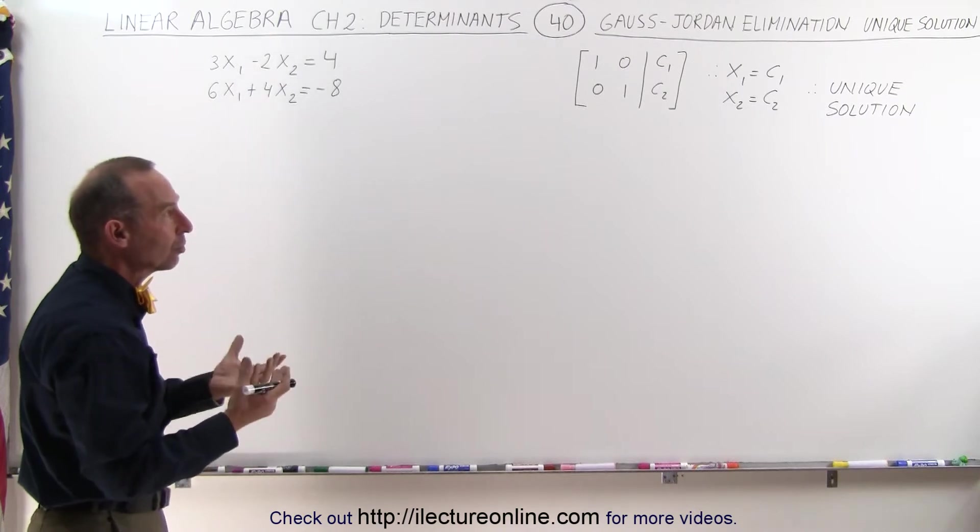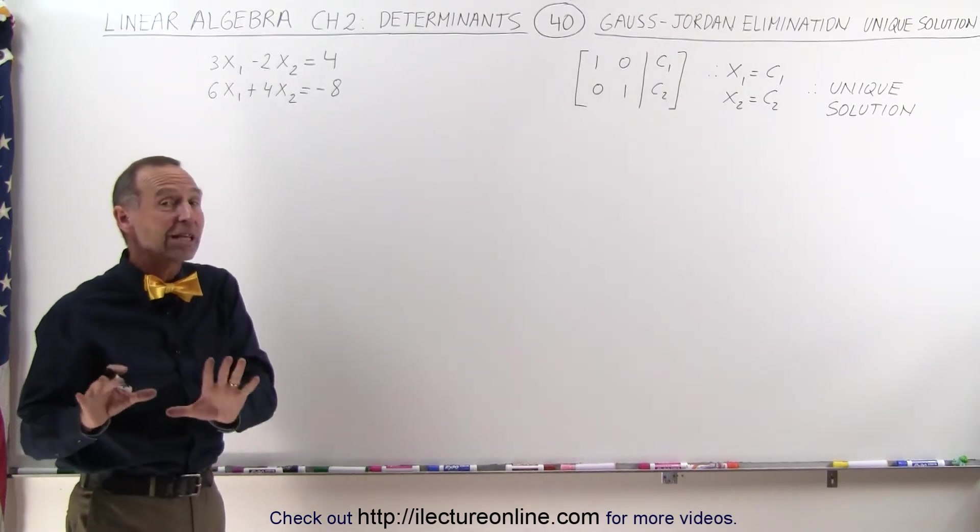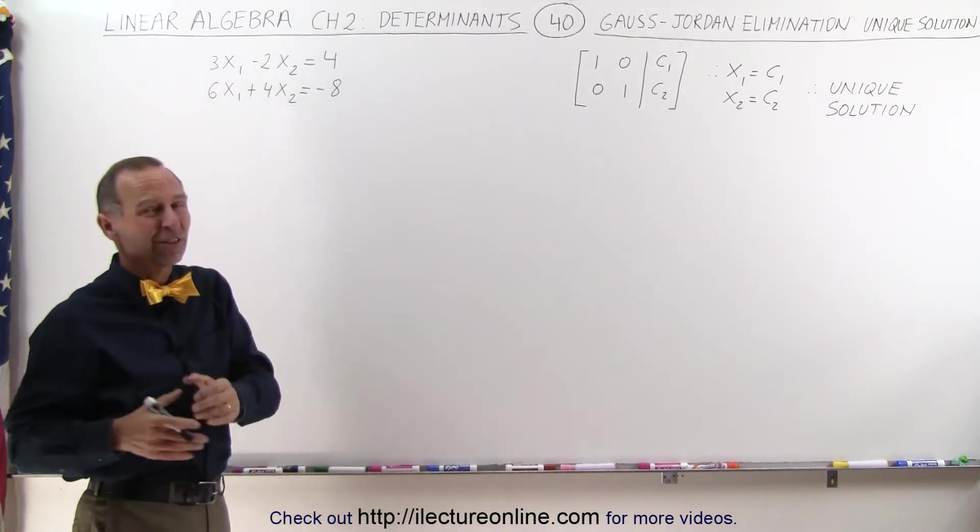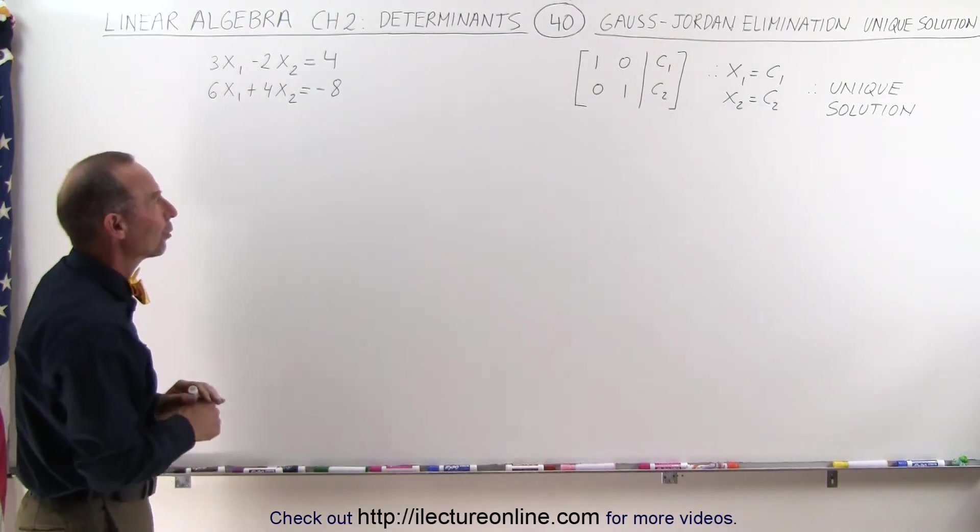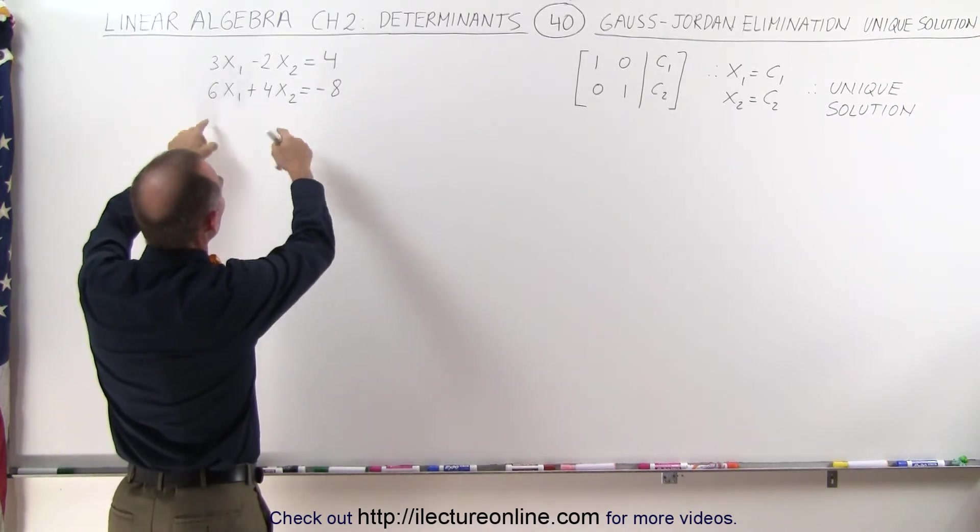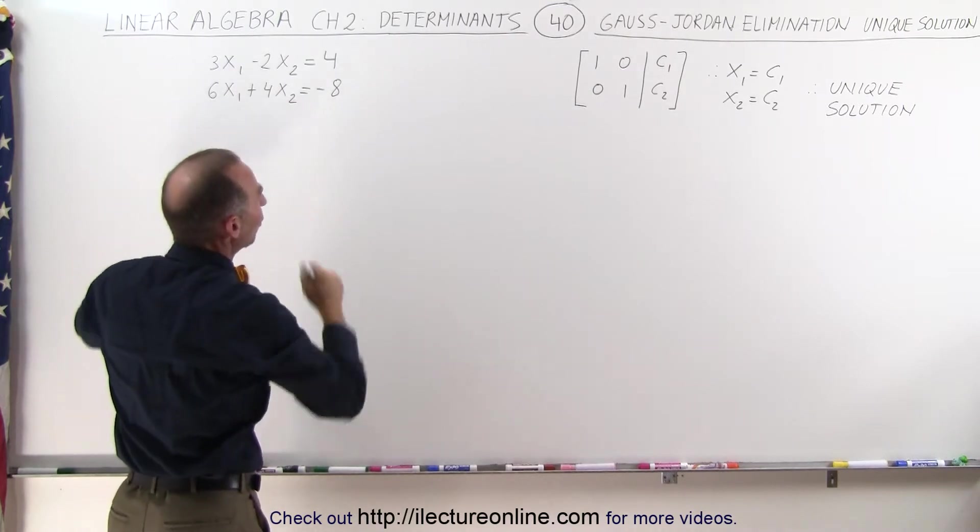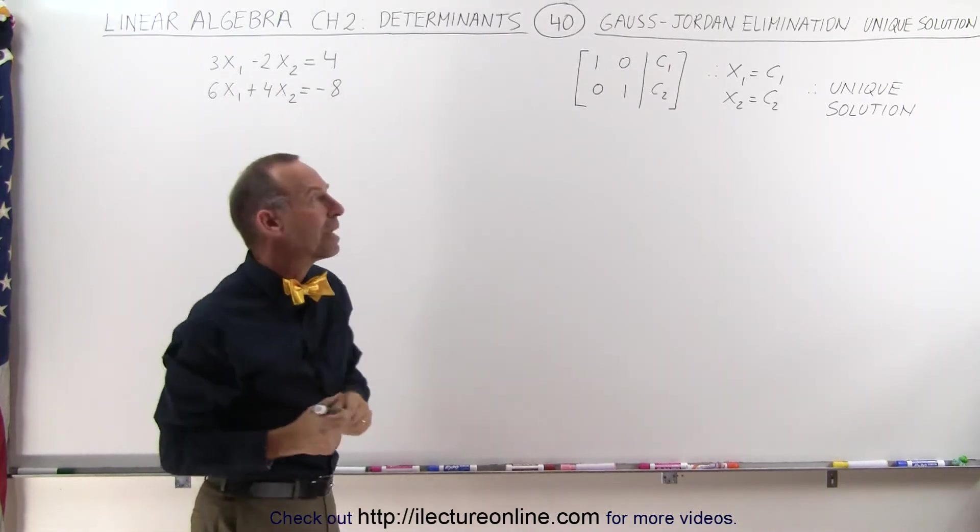The first would be a unique solution, and so here we have an example where I think we're going to get a unique solution. We'll see the other two solutions in later videos. A unique solution means that if we take the coefficients of the variables and the constants at the end, and we place those in what we call an augmented matrix...